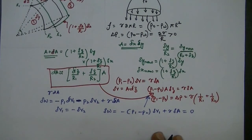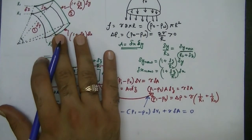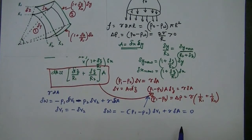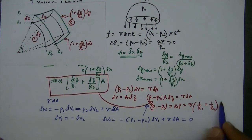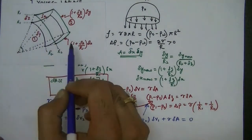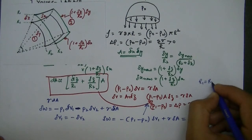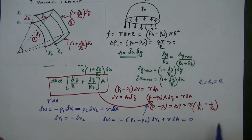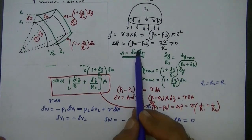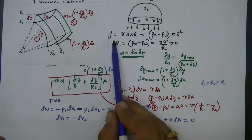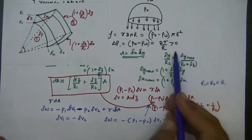For a sphere, the two radii of curvature R1 and R2 are both equal to the radius of the sphere R. Substituting into the Young-Laplace equation gives the pressure difference across a spherical interface as 2 gamma over R, which is consistent with the result derived earlier for a spherical drop.